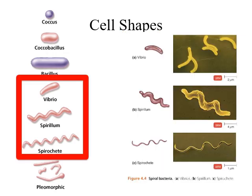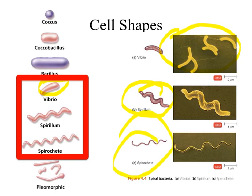A vibrio is comma-shaped. Here are real vibrio under a false-color scanning electron microscope — the background is colored green and the vibrio yellowish. Below that we have a spirillum, which has two or three bends and is fairly thick compared to the spirochete. The spirochete has about half a dozen bends or so, is very thin and very flexible, and moves much faster than spirilla under the microscope. At the bottom are pleomorphic bacteria showing no consistent shape.